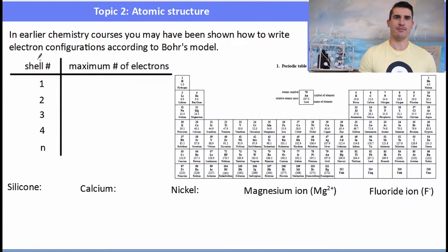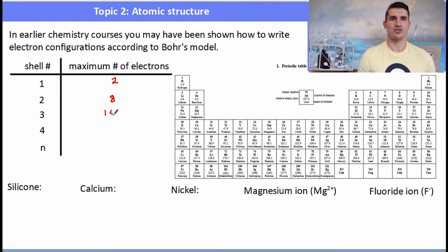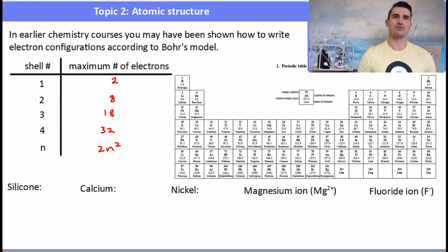In the first shell there's a maximum of two electrons, in the second shell eight, in the third shell eighteen, and in the fourth shell thirty-two. If we have n shells, the formula for the number of electrons is 2n². In a previous course you might have been asked to write the electron configuration of silicon.